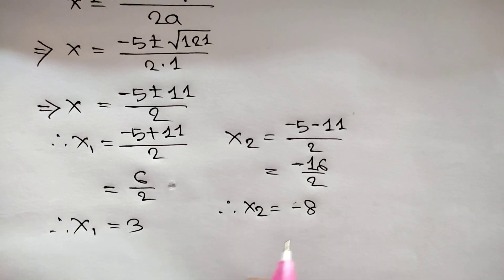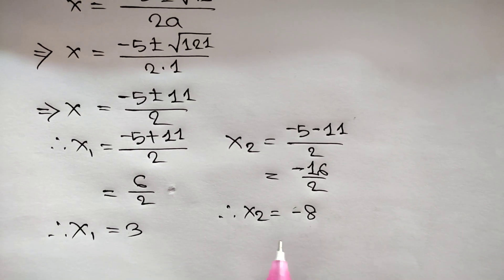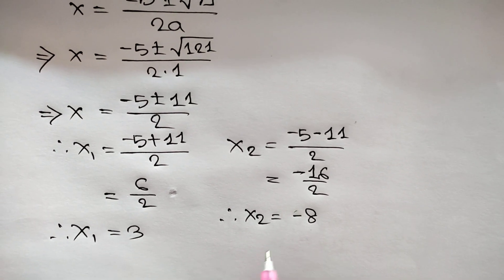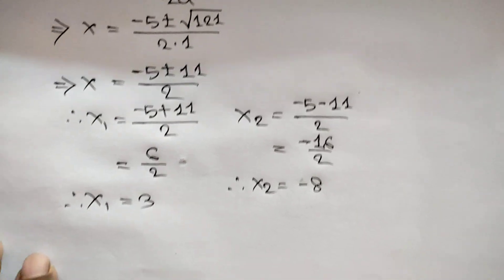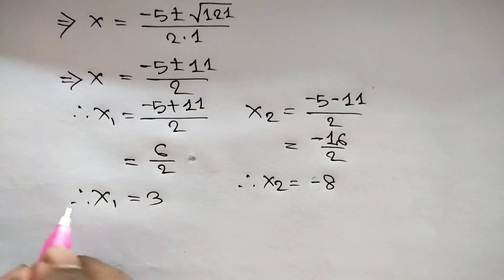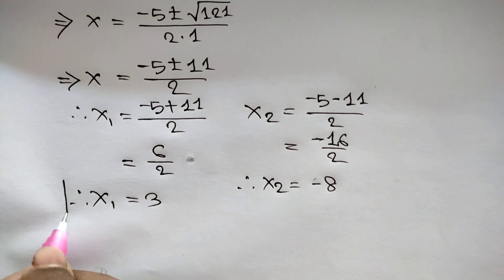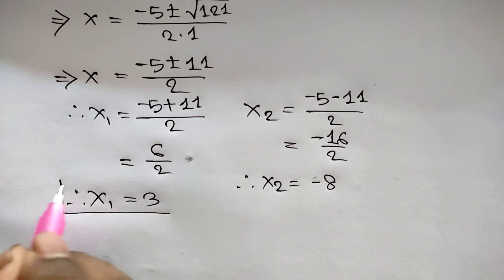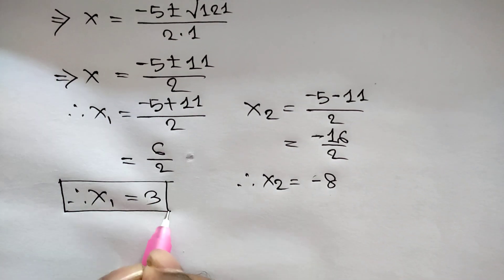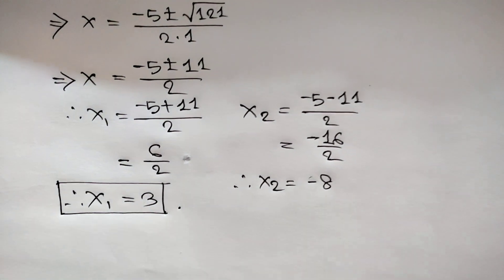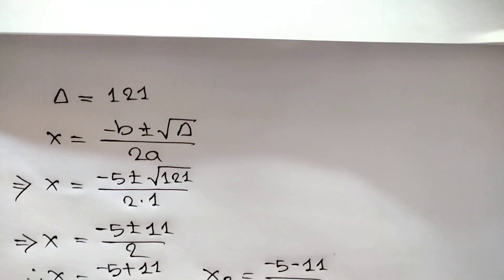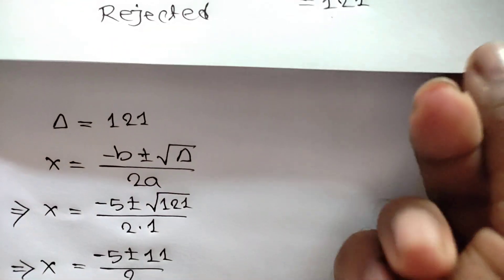But x equals −8 is a negative value, so it is rejected. Finally we get x equals 3. Thanks for watching. If you like this video please subscribe to my channel. See you in the next video. Bye bye.